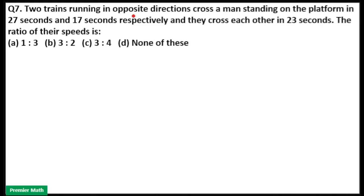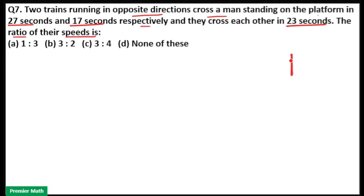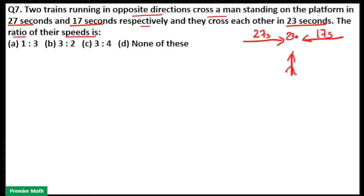Two trains running in opposite directions cross a man standing on the platform in 27 seconds and 17 seconds respectively, and they cross each other in 23 seconds. We need to find the ratio of their speeds. First train crosses this man in 27 seconds, second train crosses this man in 17 seconds, and both the trains cross each other in 23 seconds.